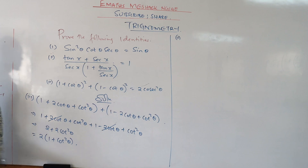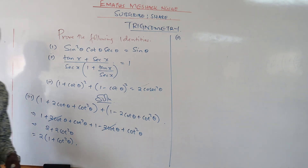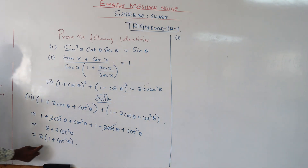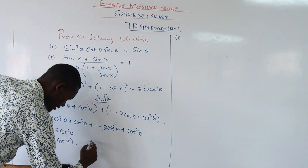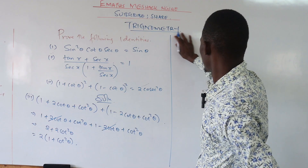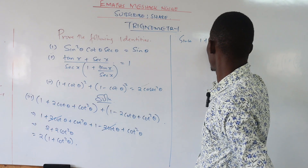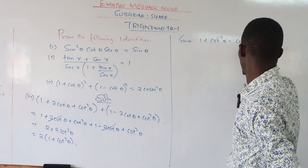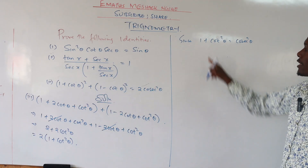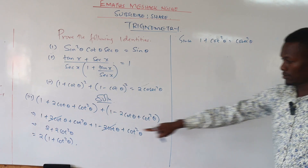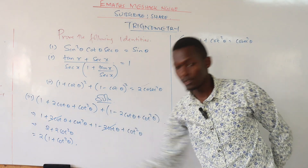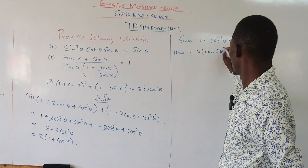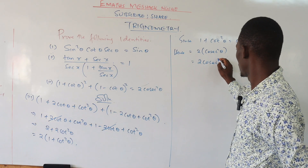Do we know something that relates one plus cot squared theta? Yes — we know that one plus cot squared theta gives us cosec squared theta. So we can replace one plus cot squared theta with cosec squared theta. Therefore, since one plus cot squared theta gives us cosec squared theta, where we have one plus cot squared theta we replace it. Hence we shall have two cosec squared theta. Our answer is two cosec squared theta.